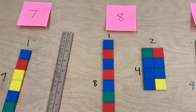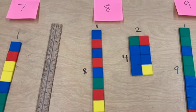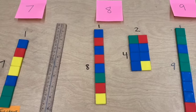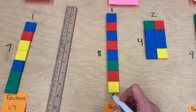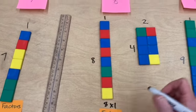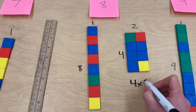For 8, we have 2 different factor pairs, 2 different combinations that we can multiply together, so we were able to make 2 different rectangles. We've got this one which is 8 by 1 and this one which was 4 by 2.